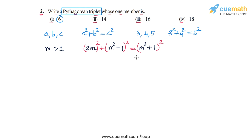Let's apply this result. In each case, we will check whether the given number could be equal to one of the expressions — 2M, M² − 1, or M² + 1 — for some integer value of M. That will help us find M and hence all three members of the triplet.